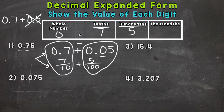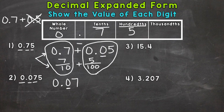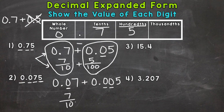On to number two, where we have seventy-five thousandths. It looks very similar to number one, but the seven is in a different place and the five is in a different place. We do not have a whole number. We have a zero in the tenths and our seven is in the hundredths place this time. So our decimal form is seven hundredths — we had to use that zero to push the seven to the hundredths place — plus five thousandths. We need two zeros to push the five over to the thousandths place. In fractional form: seven hundredths plus five thousandths.